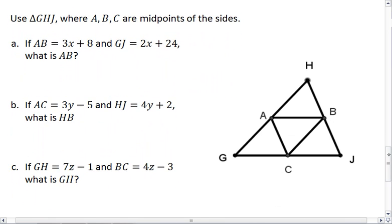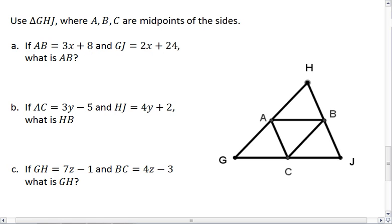Okay, how about something a little bit trickier? Here, we're going to use triangle GHJ, where A, B, C are midpoints of the sides. Okay, right away when you see midpoints, I would mark them.